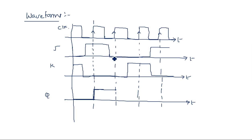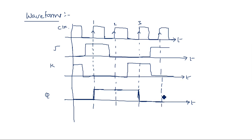At the next instant, J equal to 0 and K equal to 0 — no change, so output continues as 1. At the second rising edge, J equal to 0 and K equal to 0 — no change, previous state continued. At the third rising edge, J equal to 0 and K equal to 1 — reset, so output equals 0. After that, J equal to 1 and K equal to 0 — output goes to 1. At each rising edge, check the status of J and K, and the output is determined as per the truth table. This completes the edge triggered JK flip-flop.